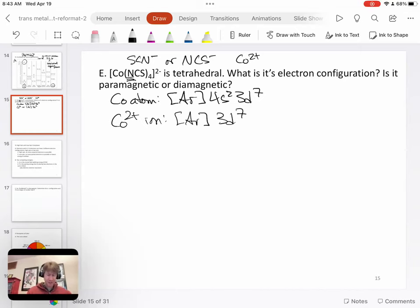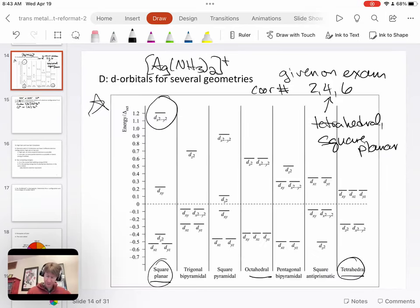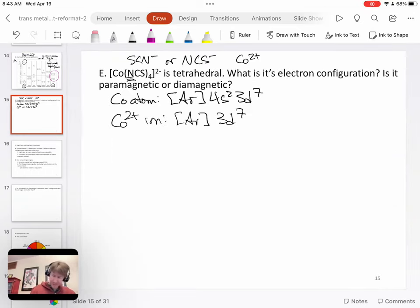We've been told that it's tetrahedral. So we go back to our tetrahedral. We have tetrahedral crystal field theory splitting right here. And we don't have to write down each of the d orbitals names, but we do have to write down two down and three up. So one, two, one, two, three. And we have seven electrons to put into them. And so let's go ahead and do that. We have one, two, three, four, five, six, seven.